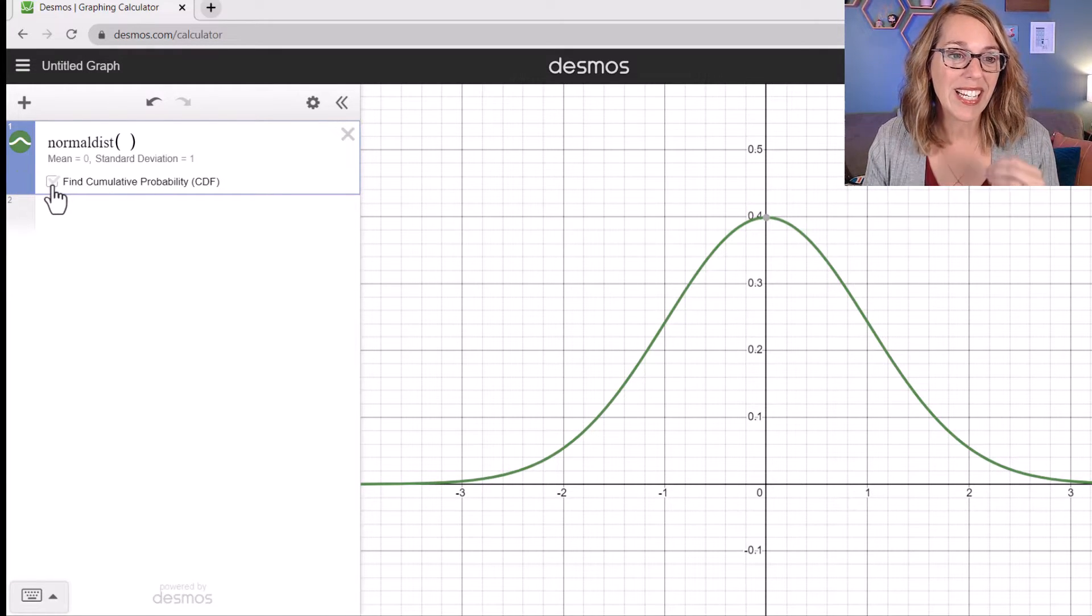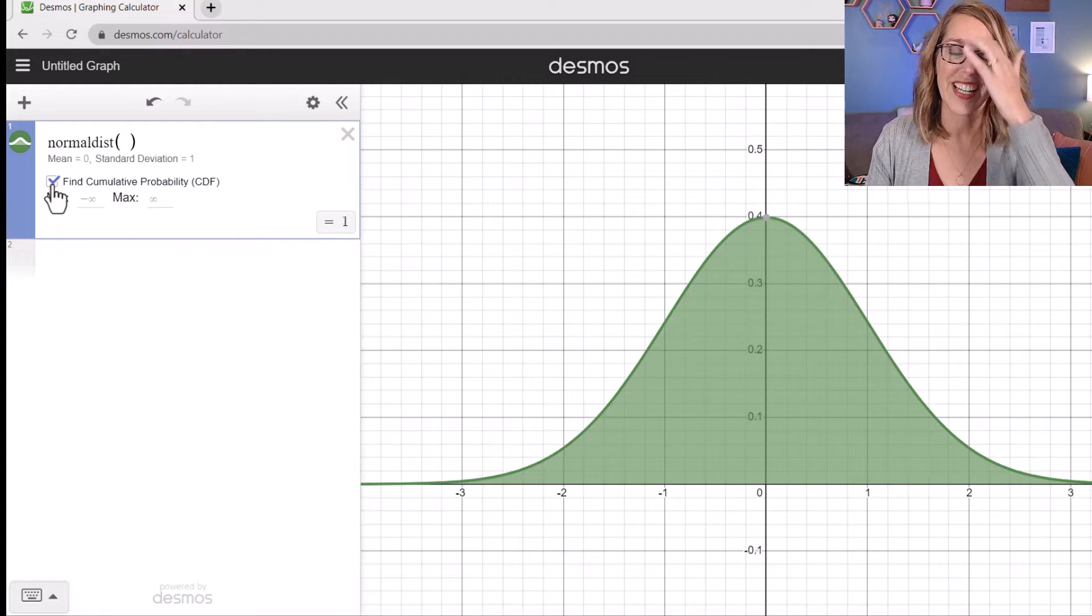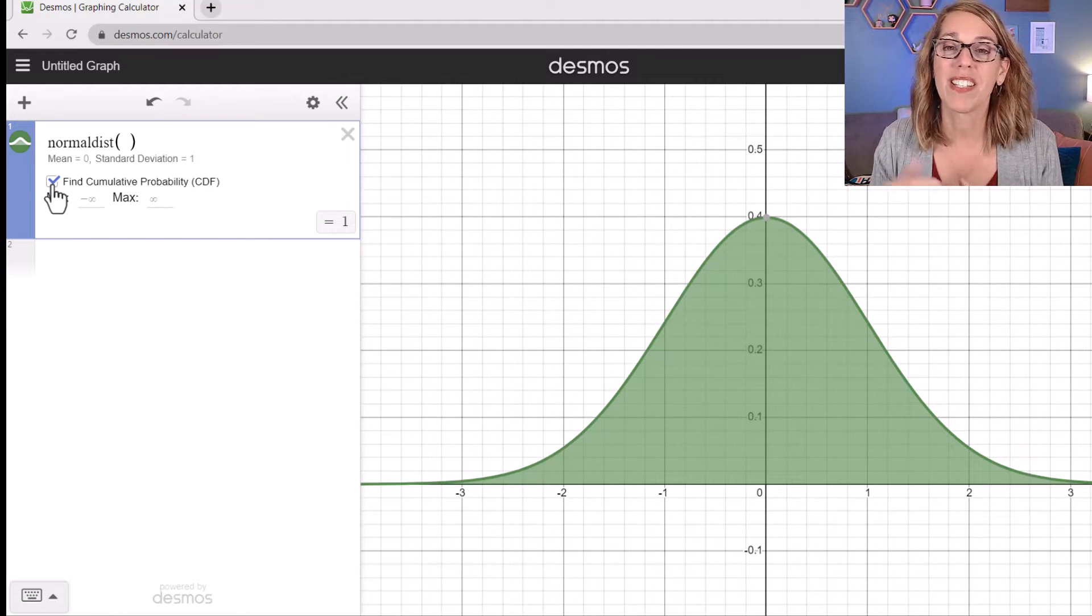I'm going to click next on find cumulative probabilities. This is also finding areas under that normal curve. As I click on this, it gives me by default, the entire area from a Z score of negative infinity to a Z score of positive infinity.